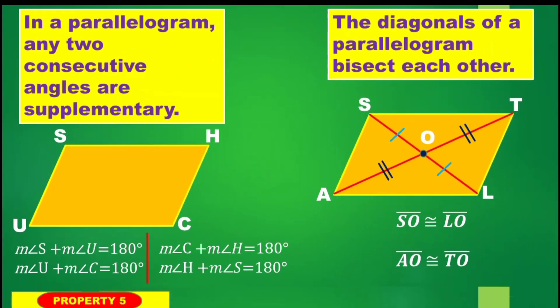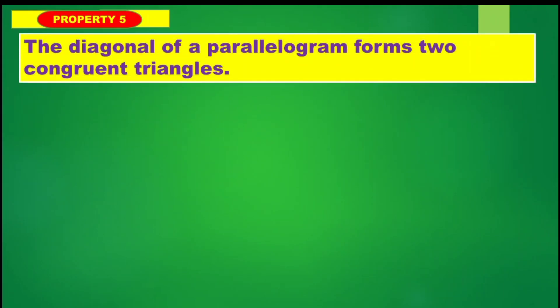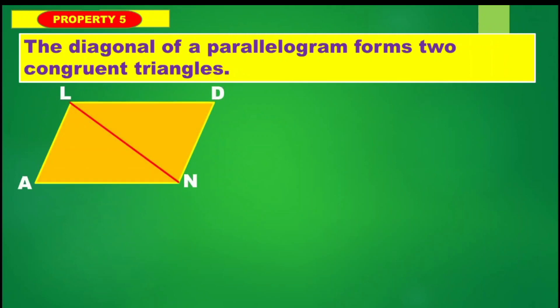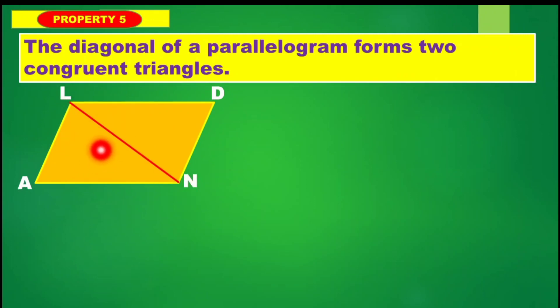Let's move on to property number five. The diagonal of a parallelogram forms two congruent triangles. We have the diagonal of parallelogram LAND, which is diagonal LN. There are two triangles formed.